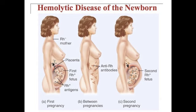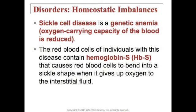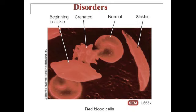Regarding disorders and homeostatic imbalances: sickle cell disease is a genetic anemia. The red blood cells of individuals with this disease contain hemoglobin S, which causes red blood cells to bend into a sickle shape when they give up oxygen to the interstitial fluid. Figure 19.17 on page 723 shows the beginning of sickle cell, a normal red blood cell, and a sickled red blood cell.